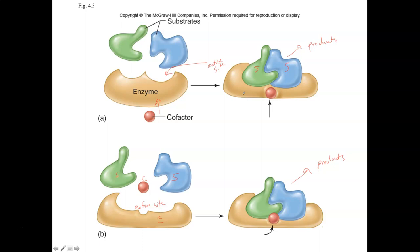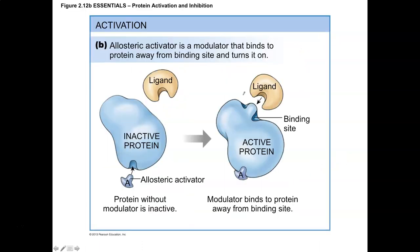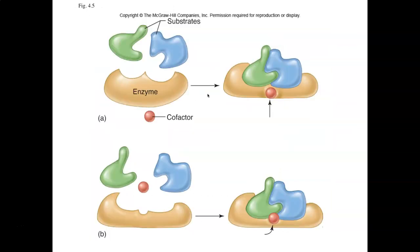Coenzymes are similar to cofactors but don't change the active site — they typically help the substrates make their way to the active site so that the reaction can take place. Coenzymes are typically vitamins. B vitamins, C vitamins, folic acid, biotin, and pantothenic acid are examples. These vitamins act as coenzymes, assisting the substrates in making their way to the active site.